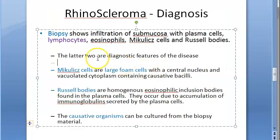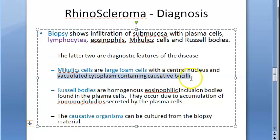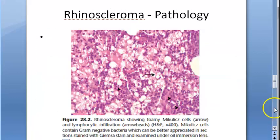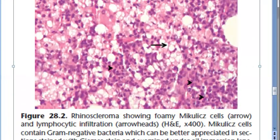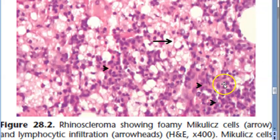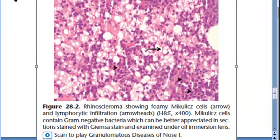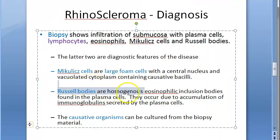Mikulicz cells are large foam cells with a central nucleus and vacuolated cytoplasm containing the causative bacilli — Klebsiella rhinoscleromatis. The vacuolated cytoplasm is visible in the microscopic image, though the central nucleus may not always be very apparent.